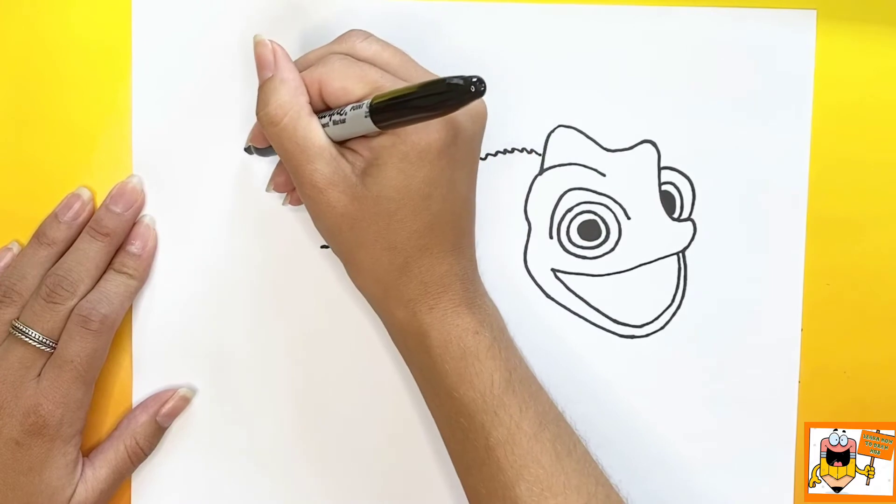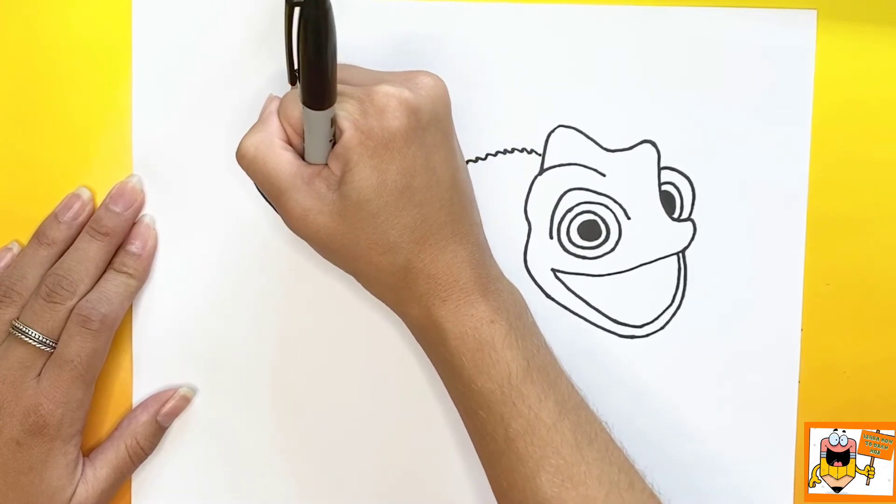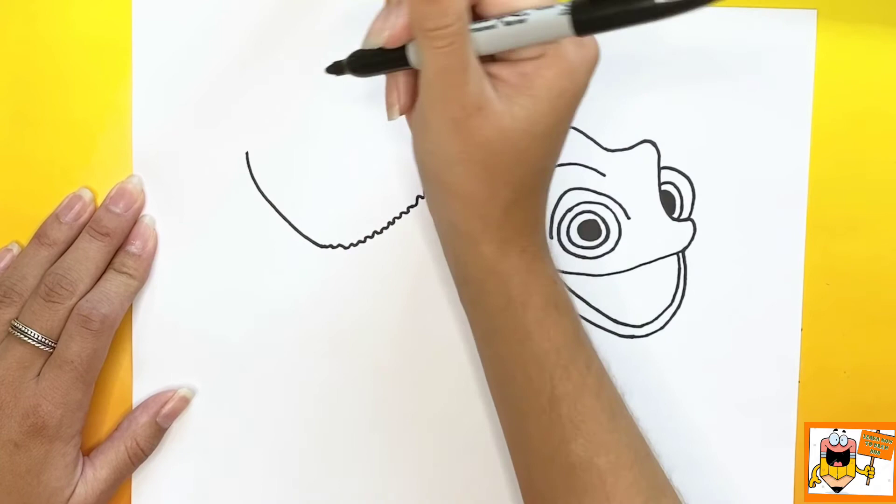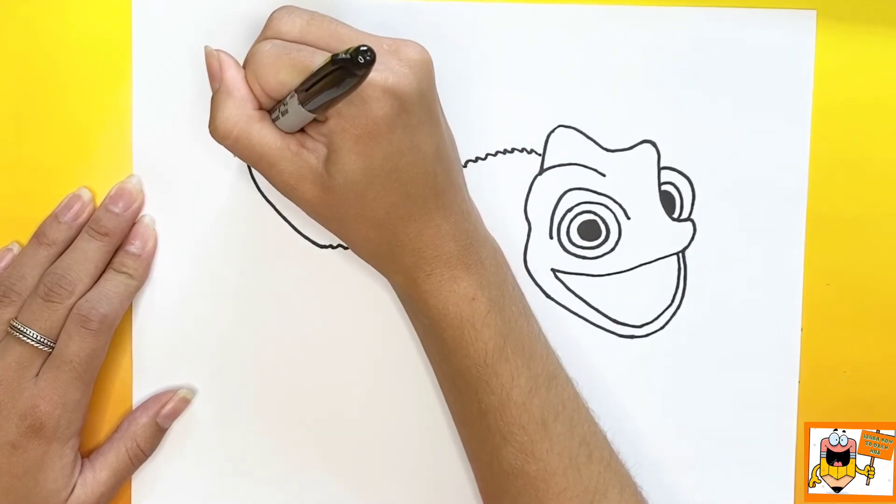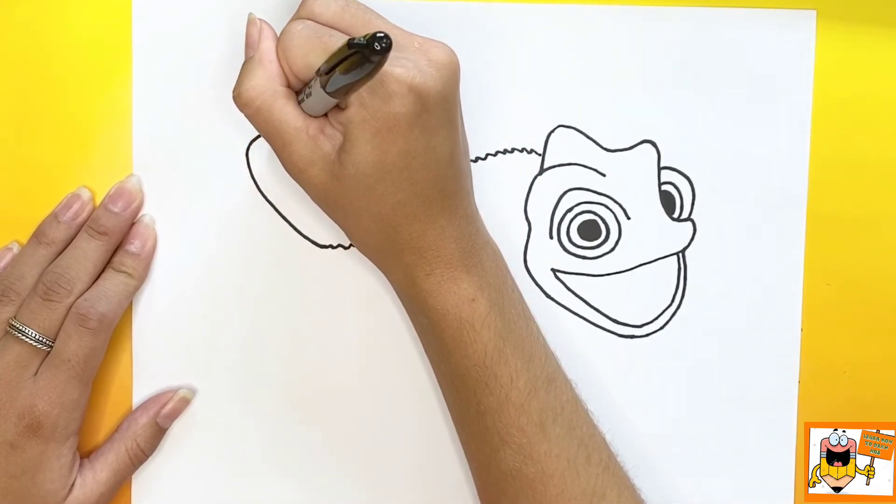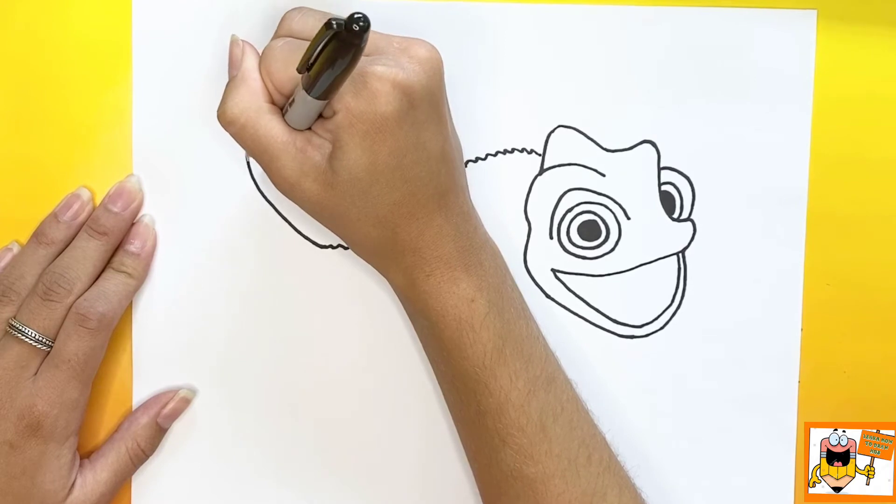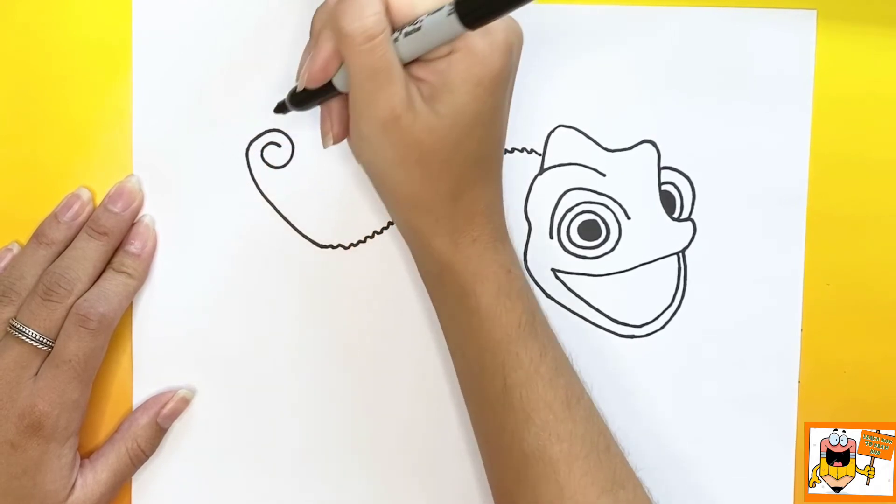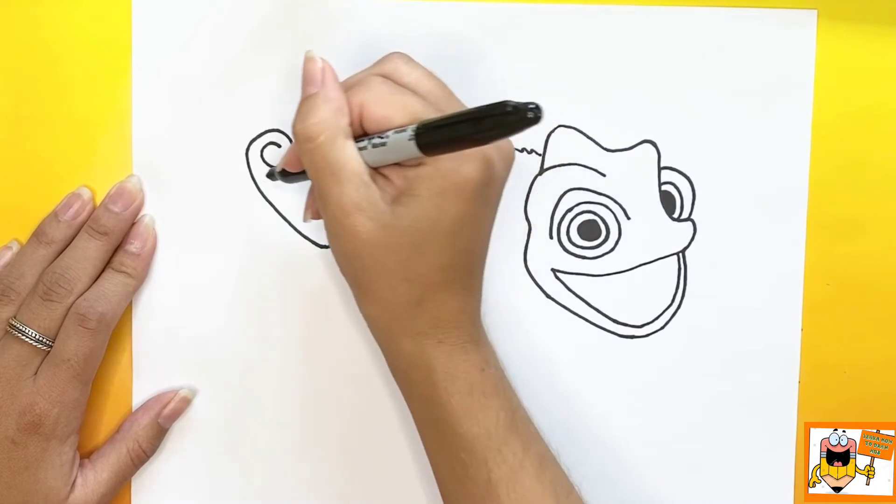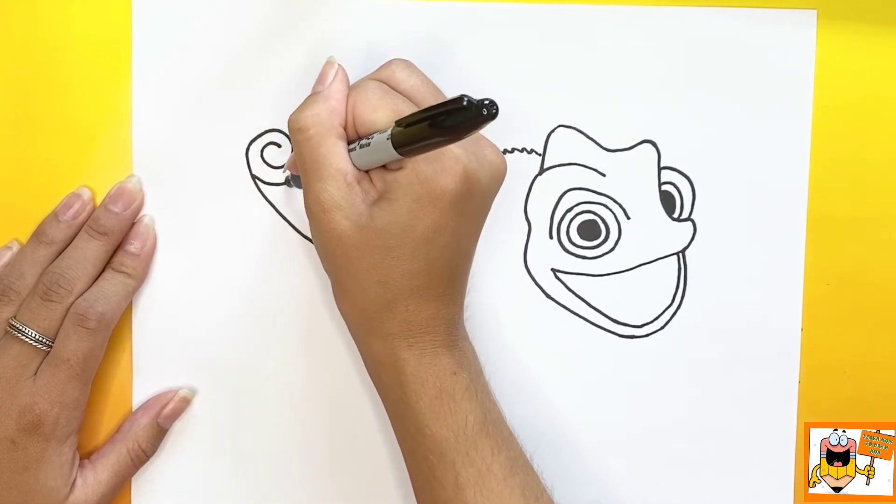Then we're going to make a curved line that points upwards. This will be the top part of his tail. Now at the top of the tail, we're going to make a swirl. Now we're going to finish the tail by making the bottom side.